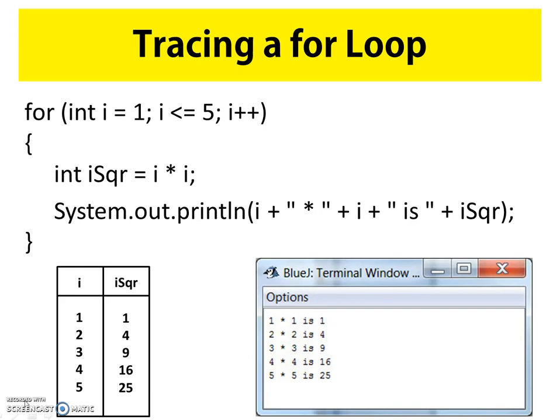Having printed that statement, we come to the end of the code block. Our counter variable is incremented from five to six. We jump back up to the condition statement and test it again: is six less than or equal to five? That's false. So we're done — we skip the code block and move on to whatever is listed after the for loop. That's how we trace a for loop.